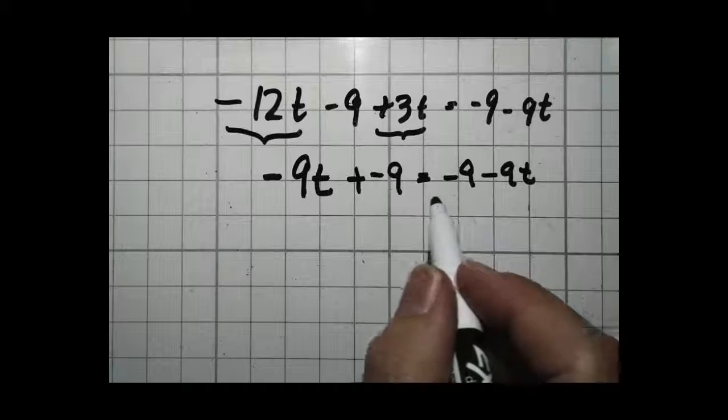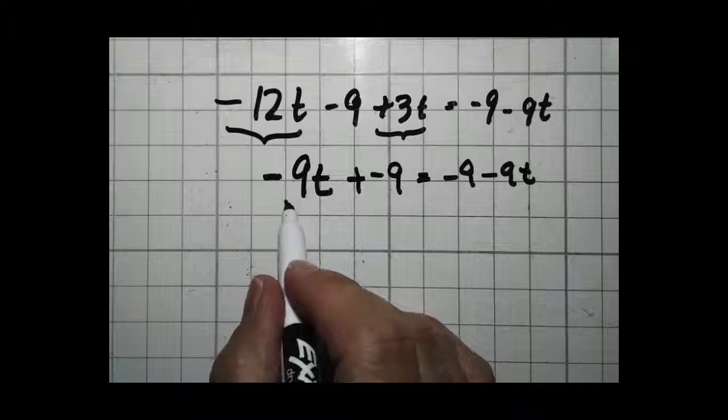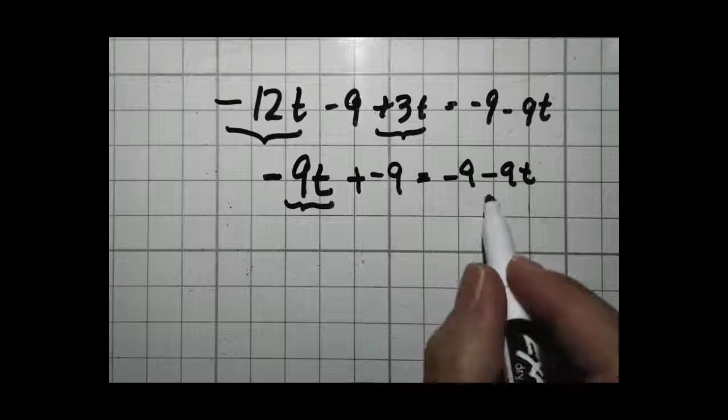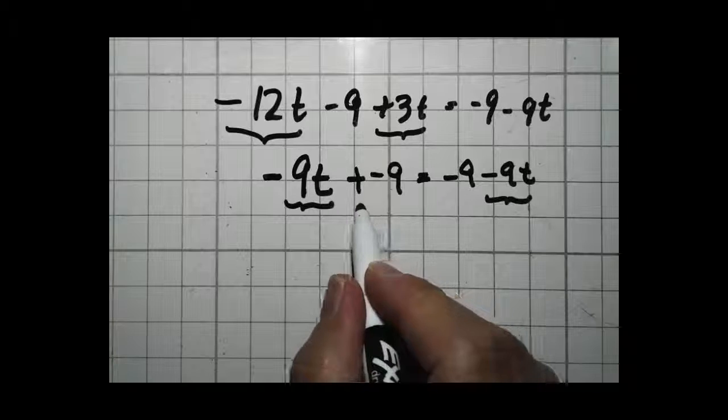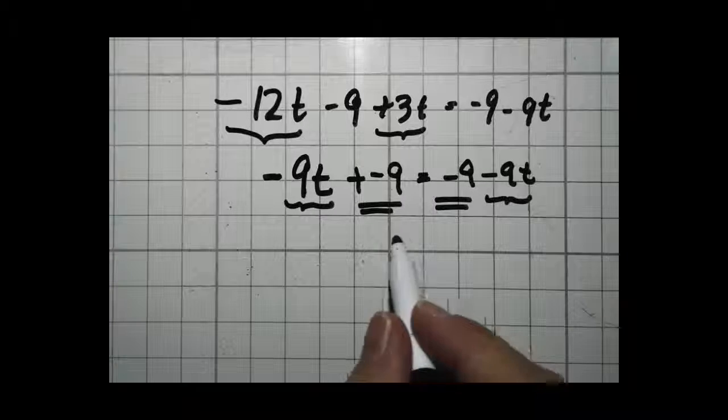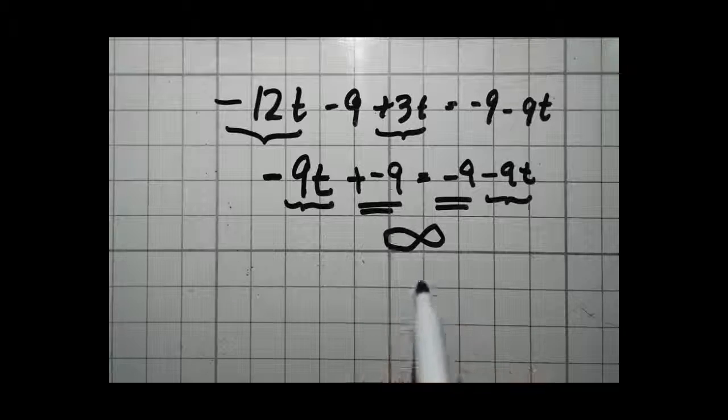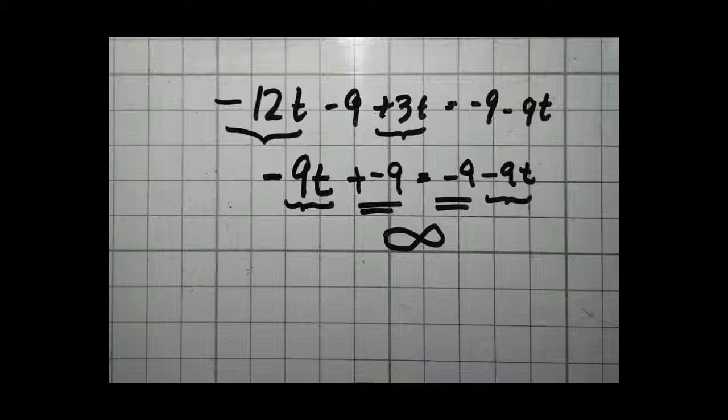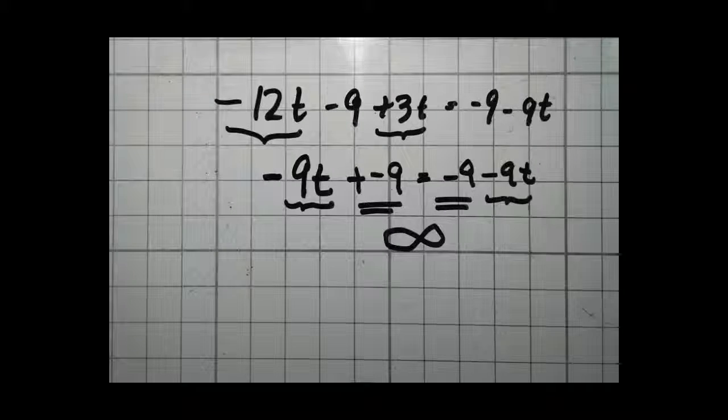Now again, that looks like it's not the same solution, but it is. Negative 9t, negative 9t, minus 9, minus 9. So this is again an identity problem, one that has an infinitely large number of solutions.